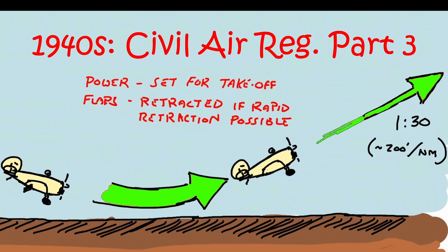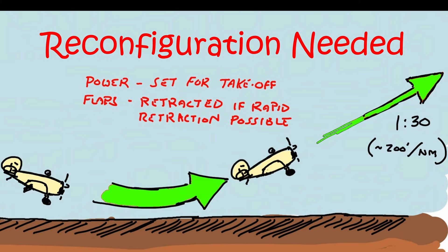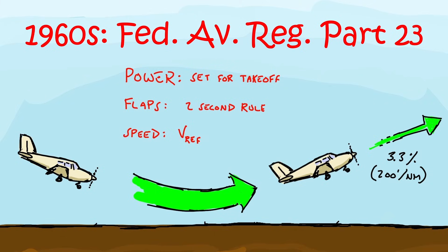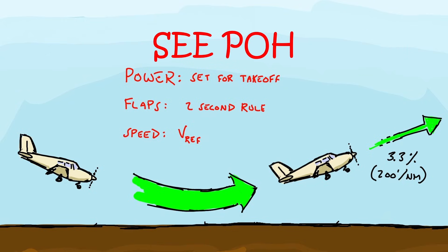As airplane certification has changed over the years, so have go-around climb requirements. Airplanes certified after World War II under Civil Air Regulations Part 3 or Part 4 were certified to make about 30-to-1 climb gradients during a go-around — a pretty flat climb gradient of around 200 feet per nautical mile — based on achieving takeoff power and, if the flaps could be retracted quickly, flaps up. A reconfiguration would be needed to clear the trees. Later, in the 1960s, small airplanes were certified under Federal Air Regulation Part 23. Those planes required a similar climb gradient, but conditions were more realistic: takeoff power required, but flaps only had to be in whatever setting achievable in two seconds or less. A reconfiguration was still needed to clear the trees.